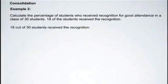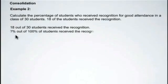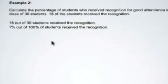What we're really doing is saying 18 out of 30 is what out of 100? Because percents are always out of 100. We can set up a proportion: 18 compared to 30 is some number compared to 100. That's what a percentage is — a number compared to 100.